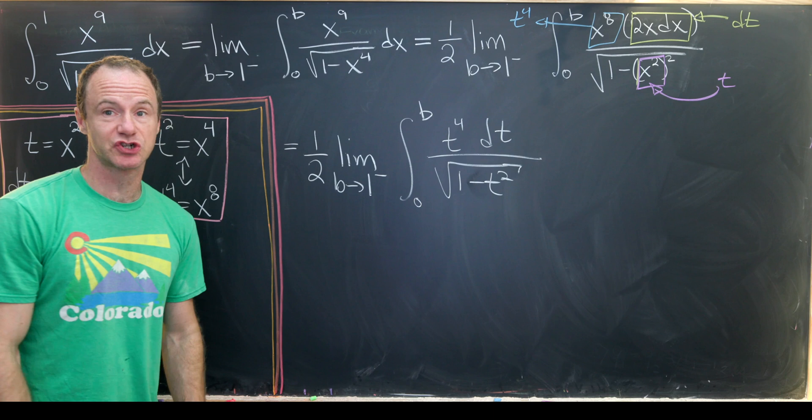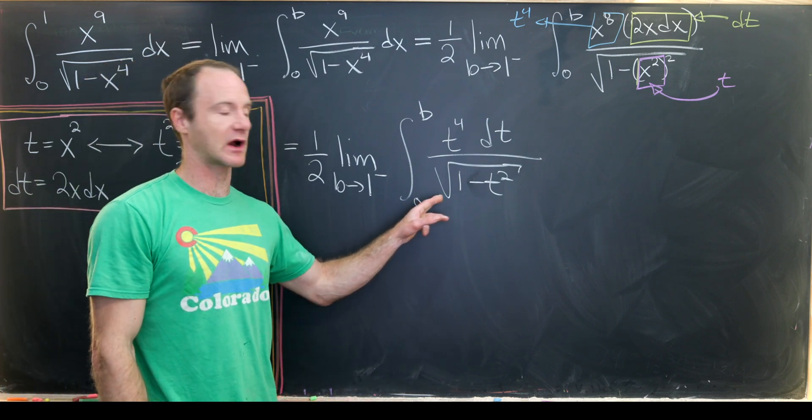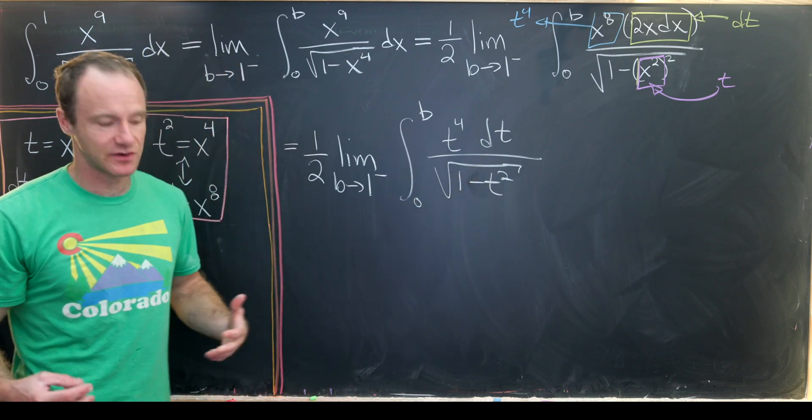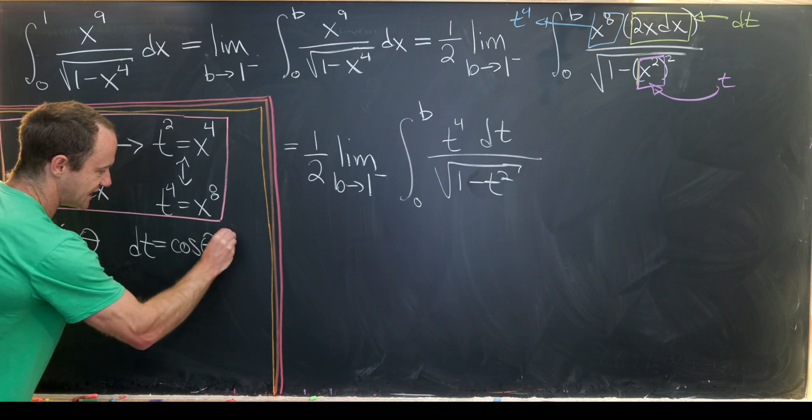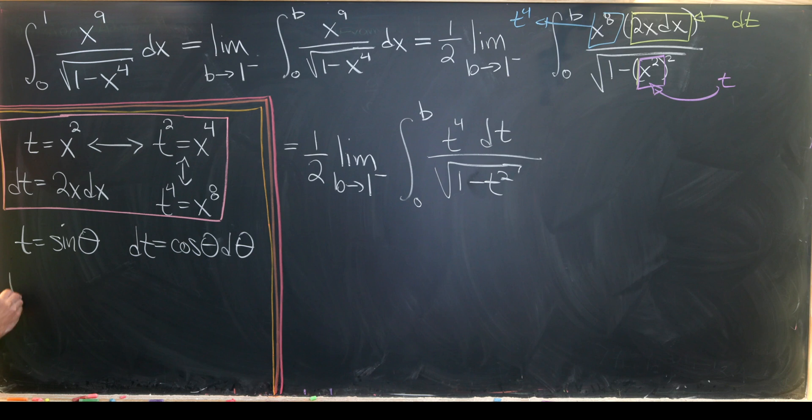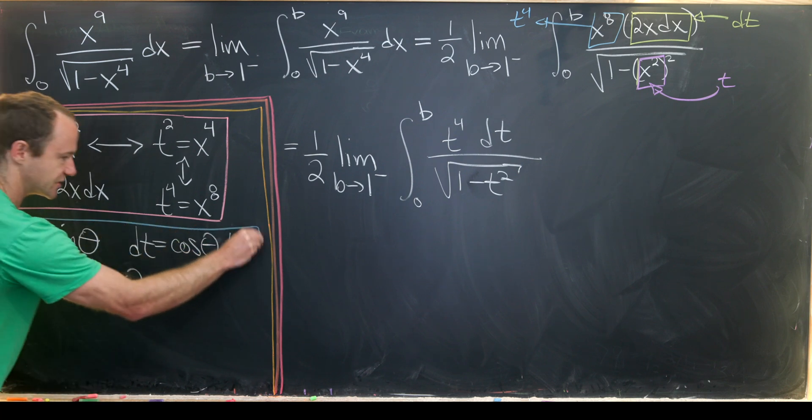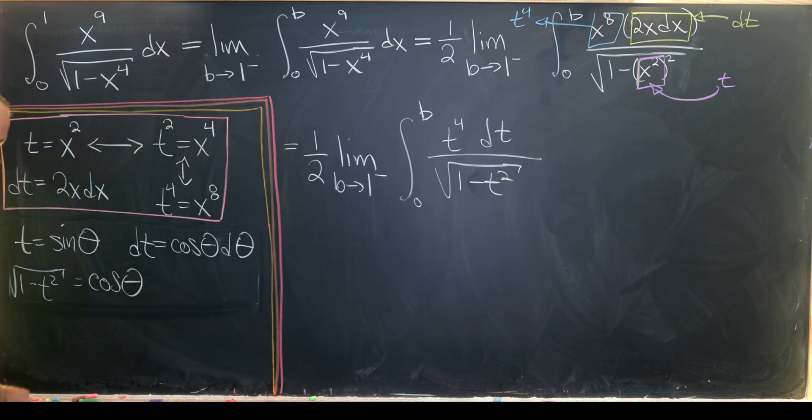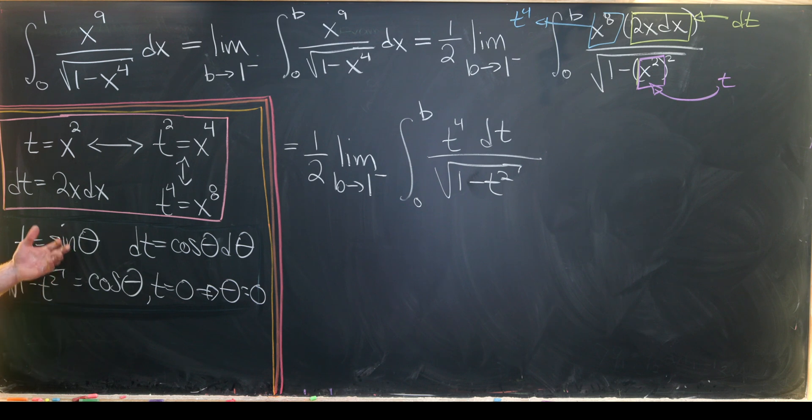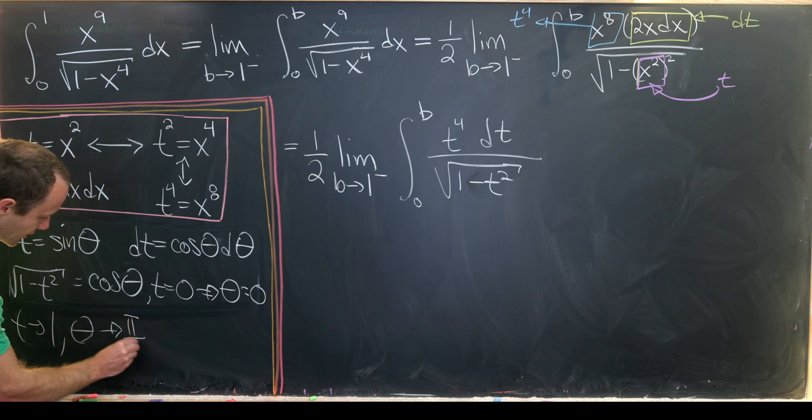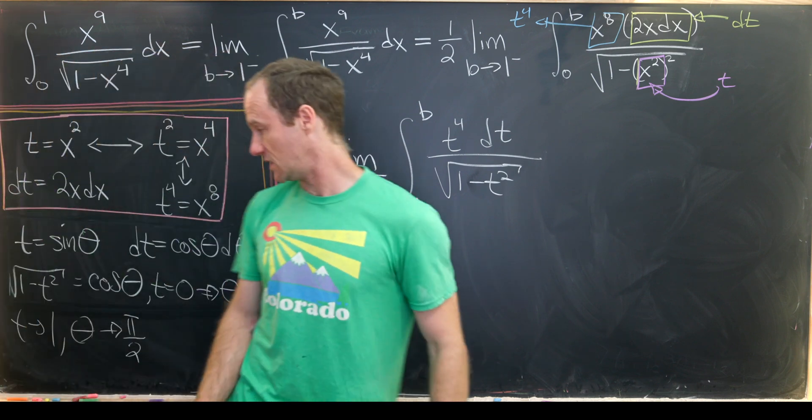Whenever we have the form sqrt(1 - variable²), the standard substitution is to set that variable equal to sin(θ). So t = sin(θ), which makes dt = cos(θ)dθ. And sqrt(1 - t²) = cos(θ) using the Pythagorean trig identity. For the bounds of integration: if t = 0, then θ = 0. As t approaches 1, θ approaches π/2.